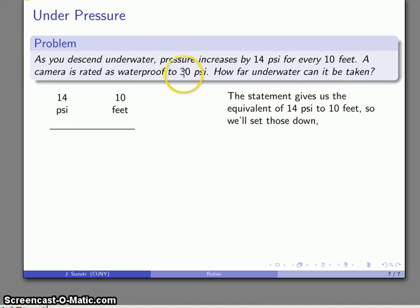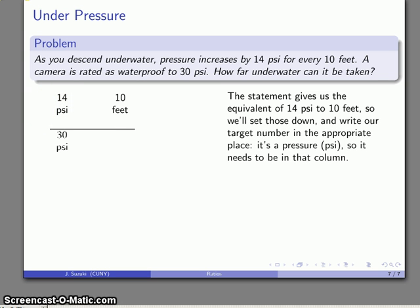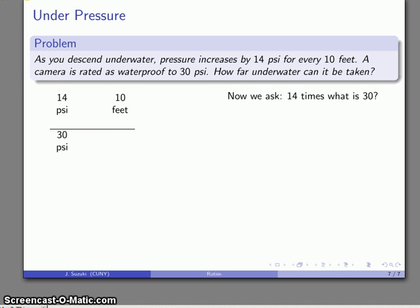This time I know the pressure. So that's going to be over here in this column. It's 30 PSI of pressure. The question is, how many feet of depth is that going to correspond to? We'll ask the same question. How many of these do I need to make up this? 14 times what gives me 30? That's the same as asking what is 30 divided by 14? That is a number that is not going to give me a whole number quotient. Fortunately, we know how to express it as a rational number. 30 divided by 14 is 30 over 14. I might want to reduce that. That's actually 15 over 7.